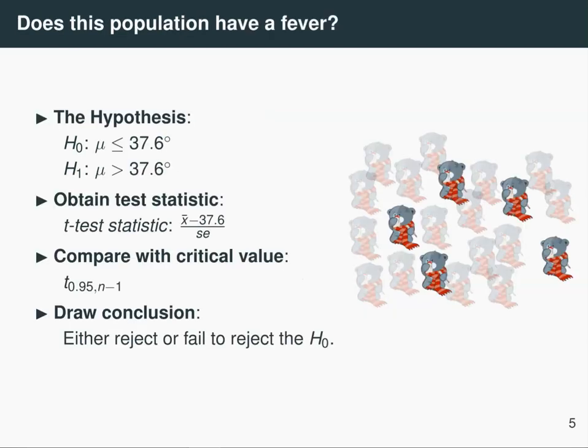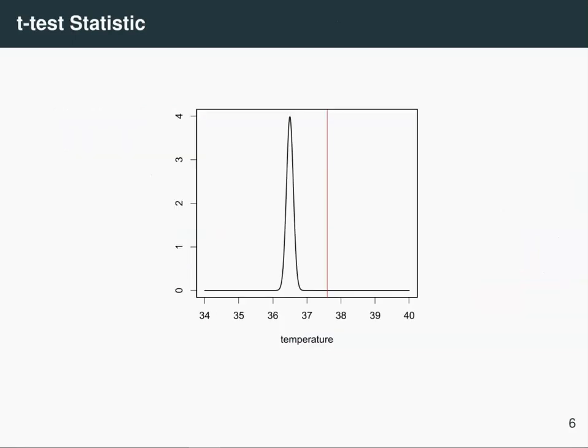Well this all depends on the test statistic and the critical value. Let's say you collect data on 100 of these people in your population who are not feeling well, and you see what their body temperature is, and the distribution of these temperatures look something like this. So most of them have a temperature in this region between 36 and 37.